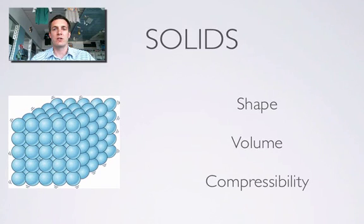So let's have a look at solids. We're going to look at these three things of all the three states of matter: their shape, their volume, and their compressibility. The shape of a solid—the point about their shape is that they retain their shape. Why do they retain their shape?